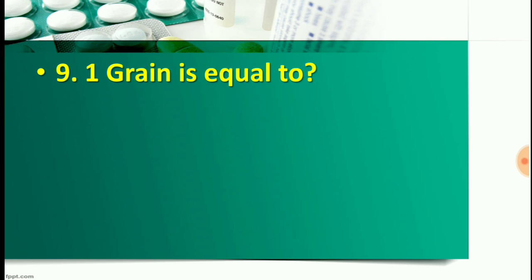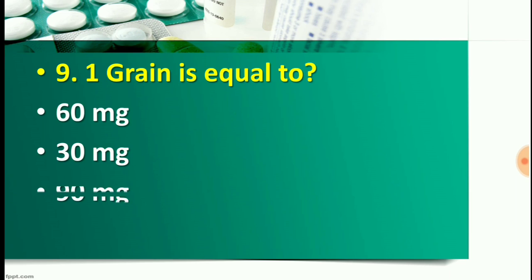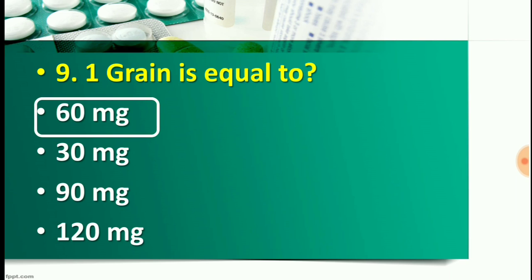Question number nine: One grain is equal to — Option A: 60 mg, Option B: 30 mg, Option C: 90 mg, or Option D: 120 mg. The right answer is Option A — 60 mg. So one grain is equal to 60 mg for practical purposes. Some books may give 65 mg, but for practical purposes you can take 60 mg.